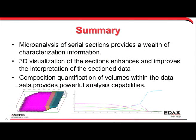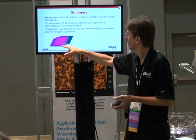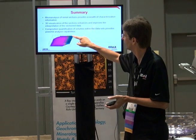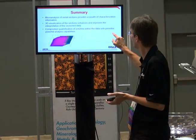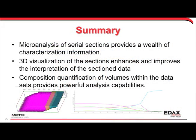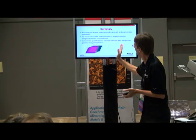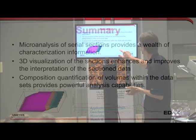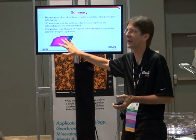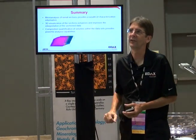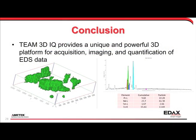In summary, microanalysis of serial sections gives a wealth of information. You need visualization to understand geometry but also composition quantification. For example, this layered structure shows an oxygen-rich solid surface, a sulfur-rich layer, and the bulk material behind it, with the proxygram revealing the oxygen profile and subtle enrichment features. Pretty rotating images are nice, but it's the microanalysis that is really the meat of the information. The conclusion is that Team 3D provides these unique capabilities of both imaging and microanalysis.